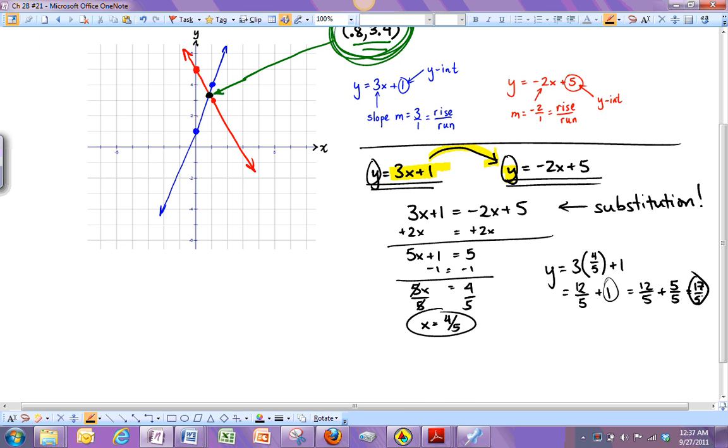So when x is 4/5, y is 17/5. But let's double check it. Let's check the y in the other one. So -2x + 5, and x is 4/5 plus 5. So in this case, we get -8/5 plus, and then 5, I need to get a common denominator, so I'm going to do 25/5. And if we add those together, we do get 17/5 still. So when x is 4/5, y is 17/5.